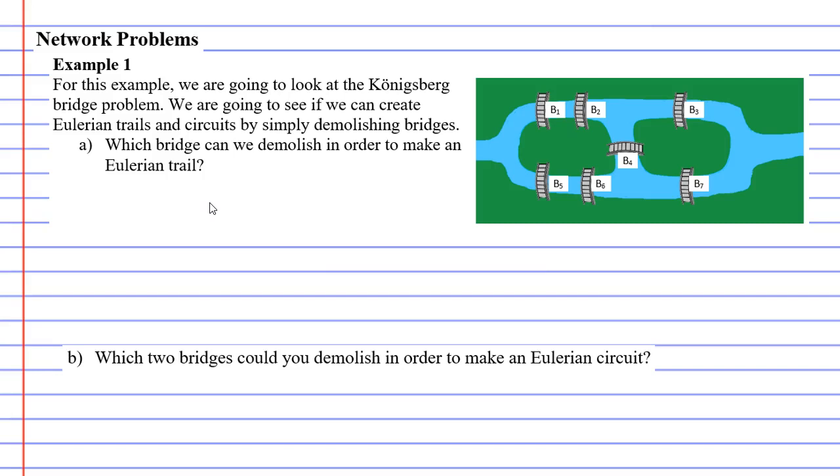Question A says which bridge can we demolish in order to make an Eulerian trail. To solve this we need to follow what Leonhard Euler did when he made every landmass a vertex. After doing that, he connected them with edges and each edge basically represented a bridge.